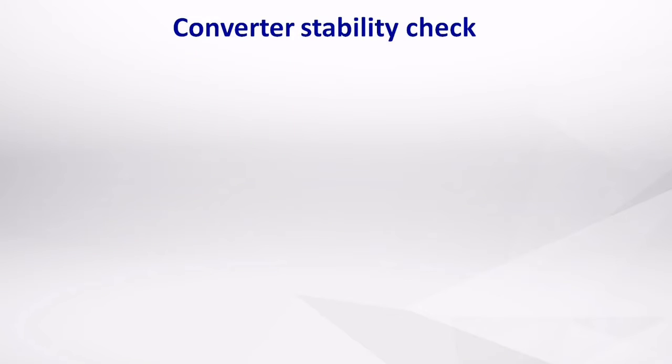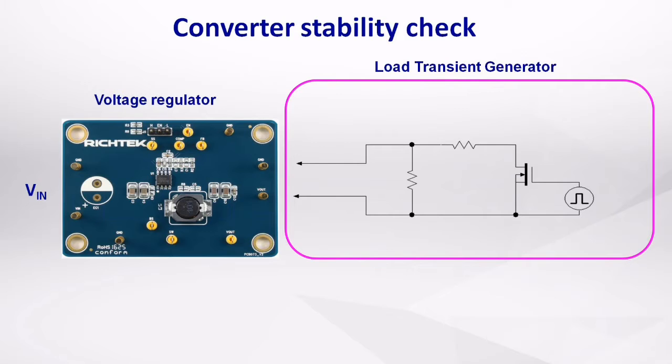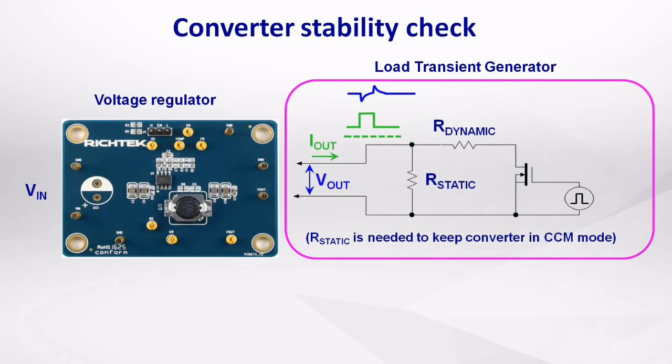You can check the stability of a voltage regulator by applying a fast load transient at the regulator output. The load transient generator consists of a MOSFET switch, a dynamic load resistor, and a static load resistor, which is needed to keep the converter in continuous conduction mode operation. By measuring the load current and the converter output voltage, you can observe the load transient behavior of the converter.